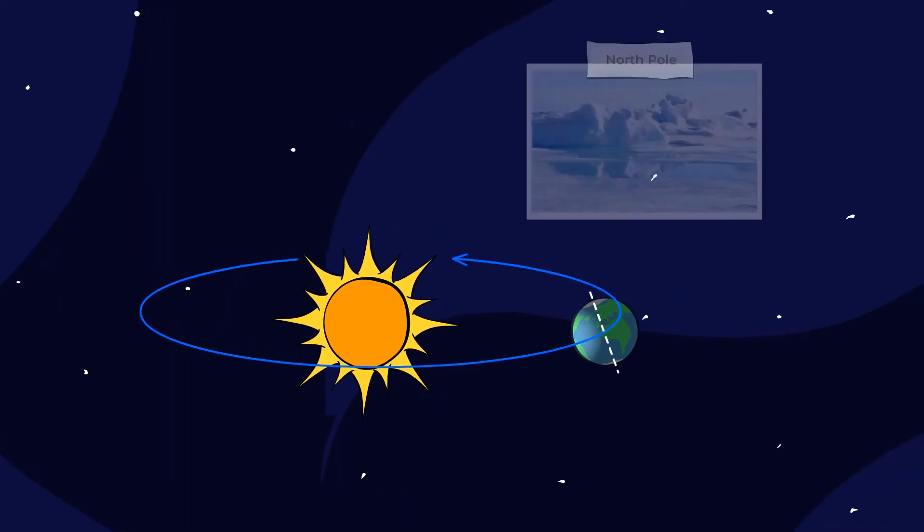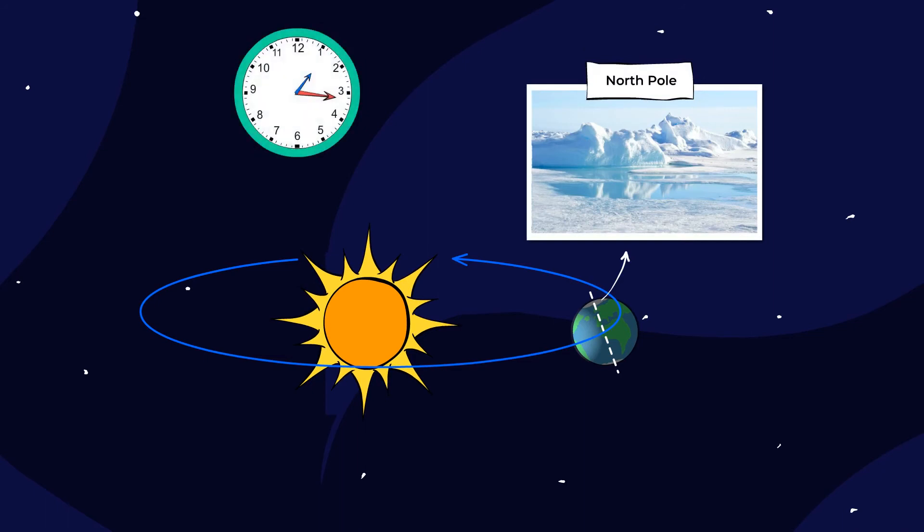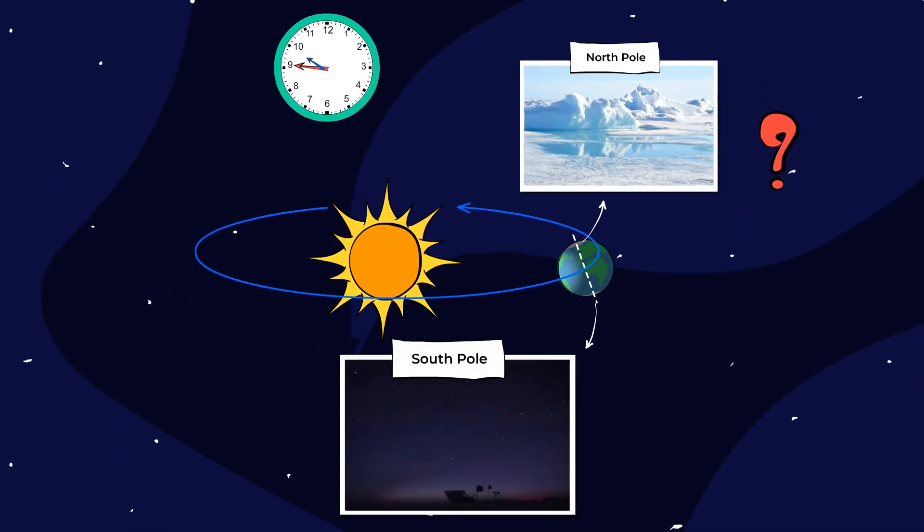It gets daylight all the time. That's right, 24 hours of sunlight during the summer. And if it's always sunny at the North Pole, can you guess what it's like during that time in the South Pole? Yep. Complete darkness. The South Pole is tilted away from the sun, so it gets no light.